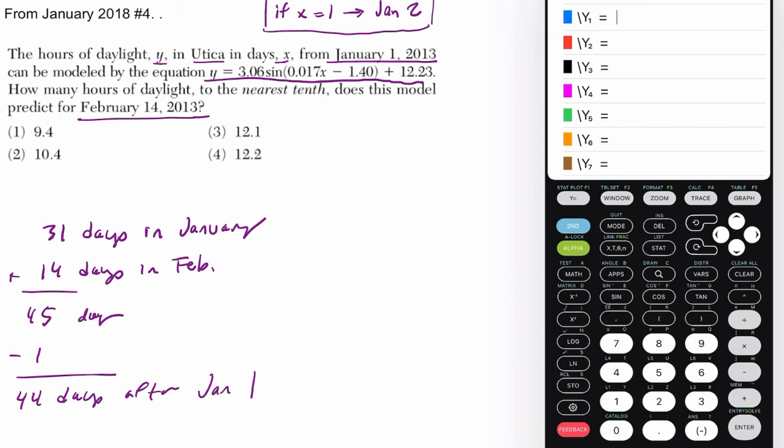Now, what you could do is just plug in 44 for X in this equation, and it would solve it. You can also graph it in the calculator. When you graph it, though, make sure you're in radian, and in general, you're dealing with radians here. I just say that even if you're plugging it in, make sure you're in radians.